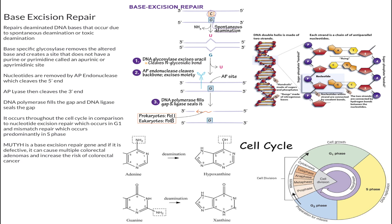Quick recap: base excision repair repairs deaminated DNA bases. First, glycosylase removes the base; then AP endonuclease cleaves the DNA at the 5' end; AP lyase cleaves the 3' end; DNA polymerase fills the gap; and finally DNA ligase seals the gap.